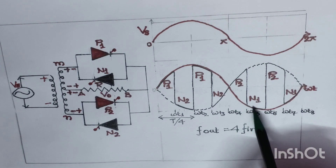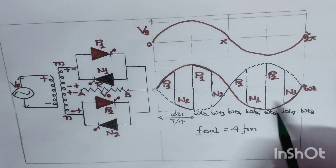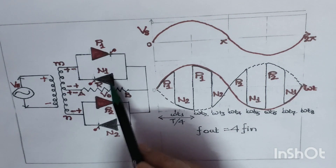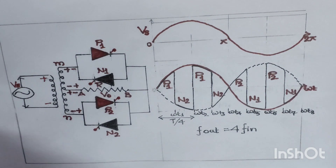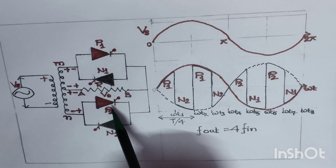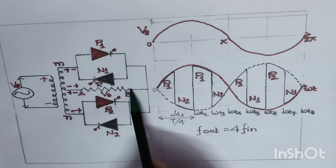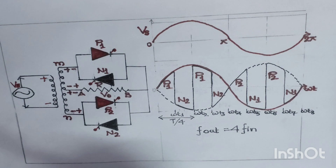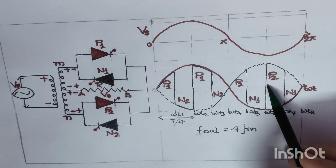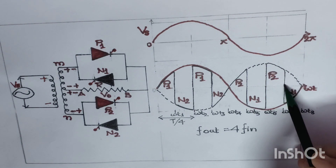At angle ωt6, we switch off thyristor N1 by force commutation and apply a positive trigger pulse to thyristor P2 again. For this negative input cycle, current flows from the positive terminal to this side, goes towards point B, and through the resistance completes the negative. A positive polarity output voltage is traced from ωt6 until it comes down at ωt7.